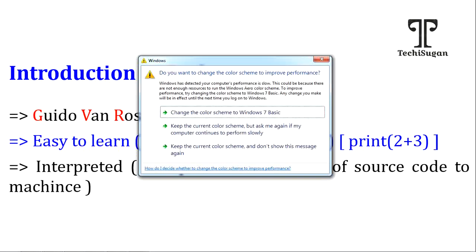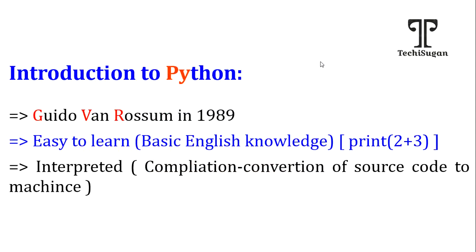How does this compilation occur? Either line by line or as an entire set of code. When the conversion happens line by line, that particular process is called an interpreter-based programming language. Once it encounters an error, it stops execution during compilation; we are supposed to debug it, and then it moves on to the next line.